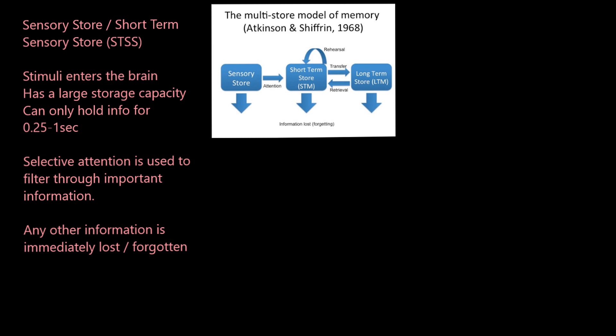Let's begin with the STSS, the short-term sensory store. Stimuli enter the brain — everything you see, hear, touch, smell, taste, feel, detect — it all hits your short-term sensory store. As a result, your STSS has a very large capacity and can hold lots of pieces of information. The downside is it can only hold that information for up to one second. You are constantly being bombarded with stimuli, and you've got to filter it — deciding what's most important to focus on. We call this process selective attention.